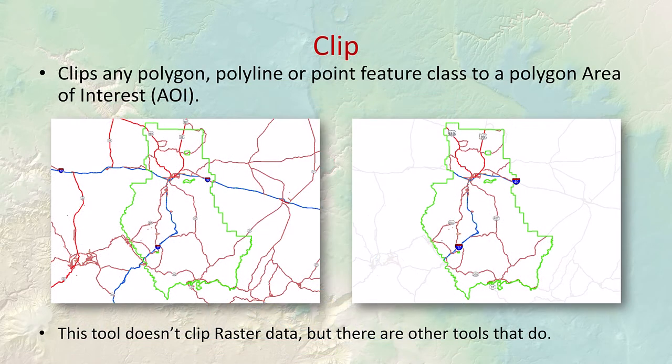The clip tool is useful when you want to analyze features within a specific area, like all roads in the Coconino National Forest. Simply selecting roads that intersect the boundary leaves roads sticking outside the forest, skewing your statistics. The clip tool isolates only those portions lying inside the area of interest — it works on vector data and acts like a cookie cutter.